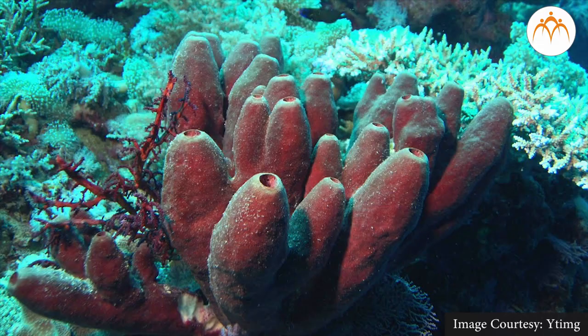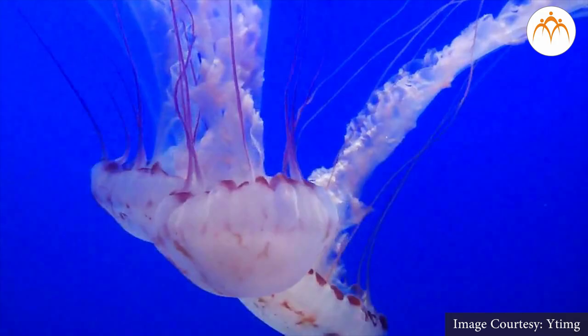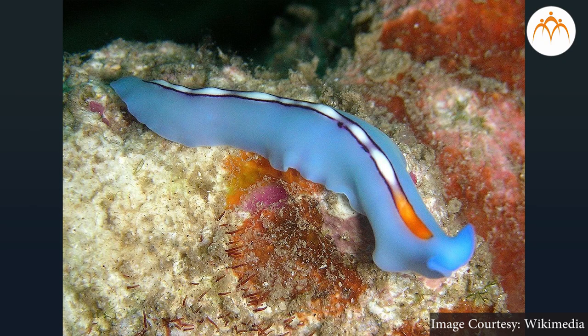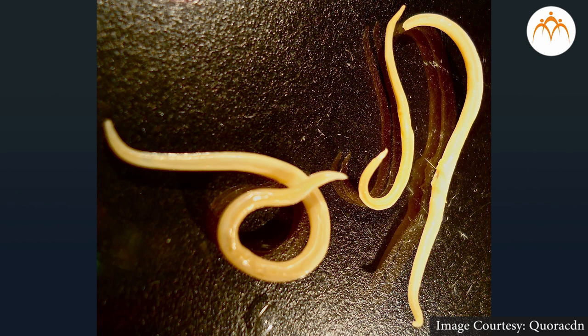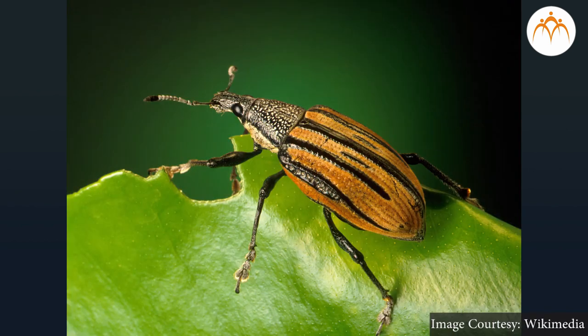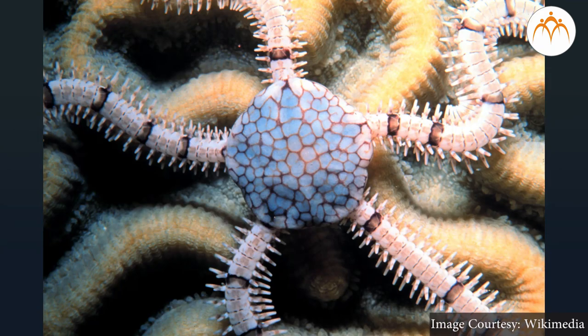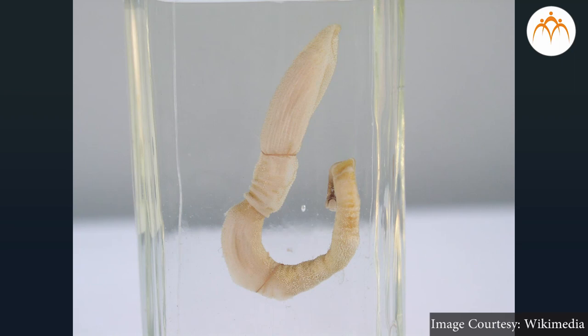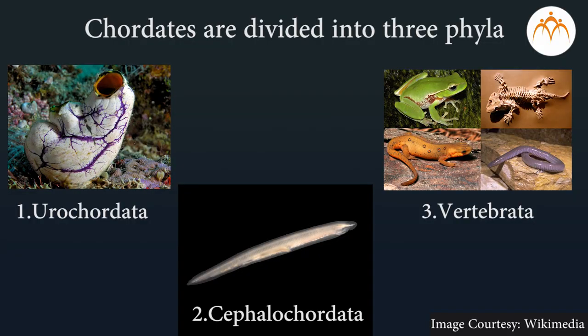Nonchordates are divided into ten phyla: Protozoa, Porifera, Cnidaria, Platyhelminthes, Aschelminthes, Annelida, Arthropoda, Mollusca, Echinodermata, and Hemichordata. Chordates are divided into three phyla: Urochordata, Cephalochordata, and Vertebrata.